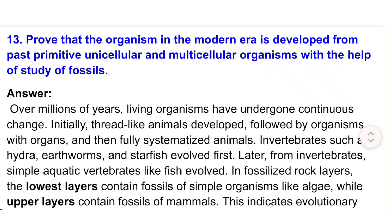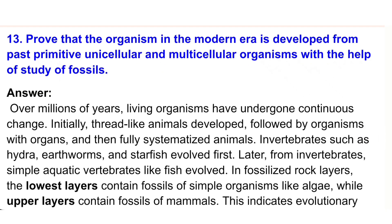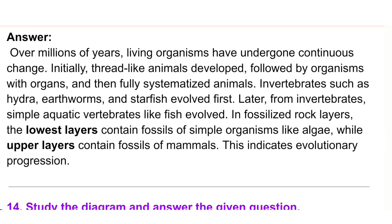13) Prove that organisms in the modern era developed from past primitive unicellular and multicellular organisms with the help of fossil study. Answer: Over millions of years, living organisms have undergone continuous change — initially thread-like animals developed, followed by organisms with organs, and then fully systematized animals. Invertebrates such as hydra, earthworms, and starfish evolved first; later, simple aquatic vertebrates like fish evolved. In fossilized rock layers, the lowest layers contain fossils of simple organisms like algae, while upper layers contain fossils of mammals, indicating evolutionary progression.